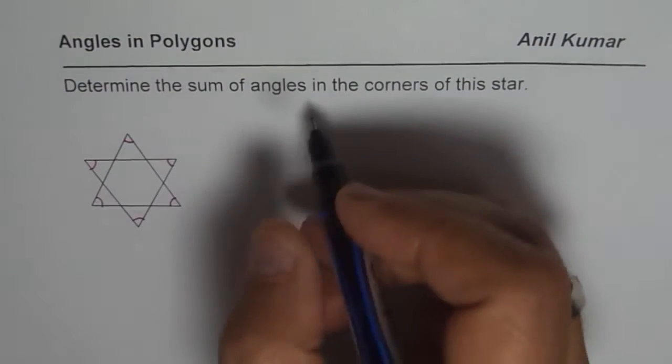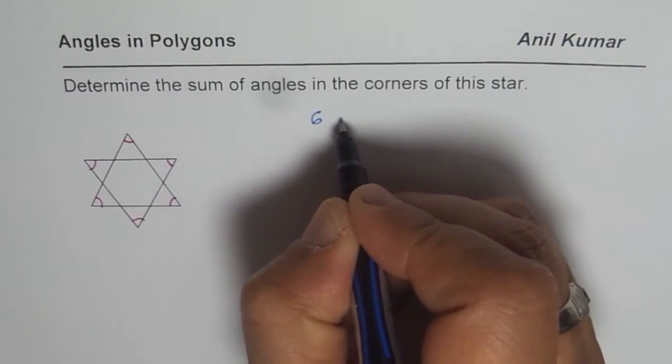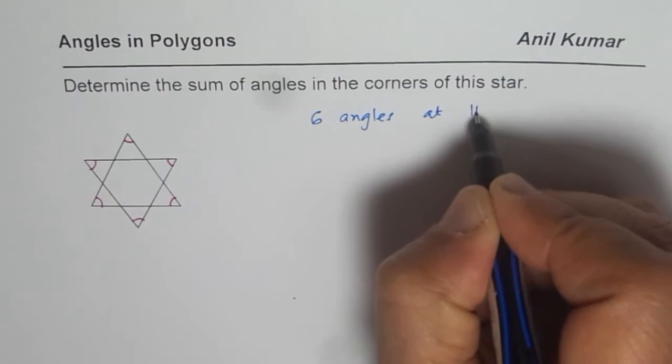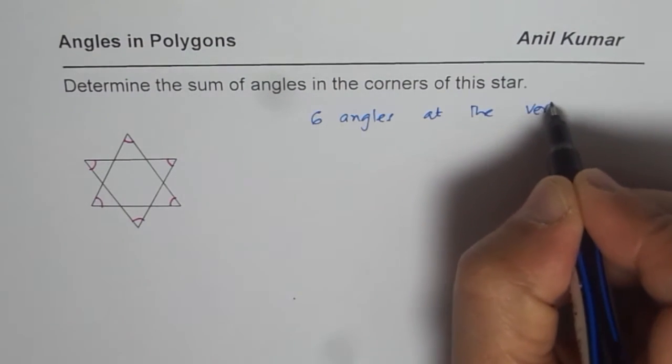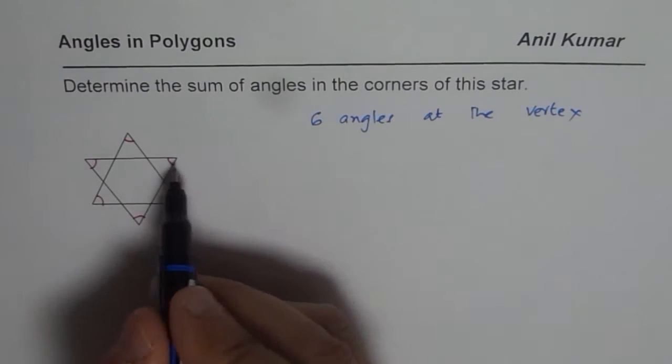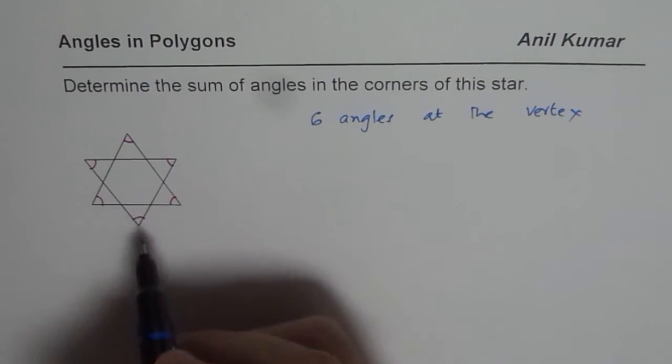So there are 6 of these. So we have 6 angles at the vertex which we want to find the sum of. As you can see these angles form 2 triangle angles.